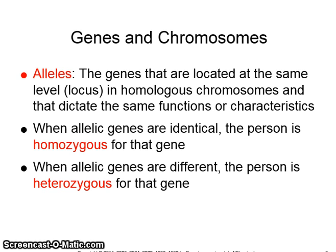Genes and chromosomes. The term alleles refers to the genes that are located at the same locus in homologous chromosomes and that dictate the same functions or characteristics. When allelic genes are identical, the person is homozygous for that gene. When allelic genes are different, the person is heterozygous for that gene.